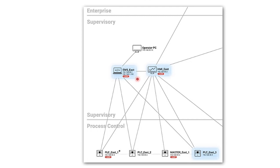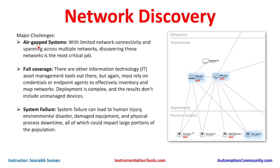There are some major challenges in network discovery. First, in oil and gas or other critical systems you will find air-gapped systems that are isolated from the main network — you cannot do anything with them. With limited network connectivity spanning across multiple networks, discovering these networks is the most critical job. Additionally, we always want full coverage, but most IT asset management tools rely on credentials or endpoint agents to inventory and map networks. Deployment is complex, and results do not include unmanaged or obsolete devices that do not respond to queries, so full coverage is sometimes not possible. Reaching an optimum level of coverage and then performing some tasks manually is a practical approach.